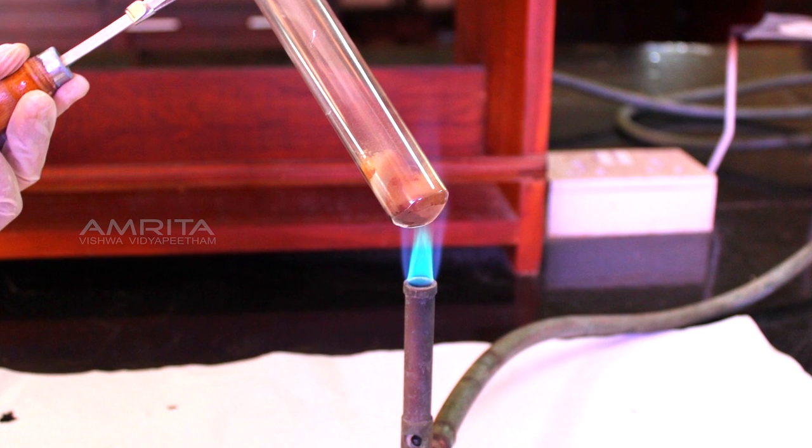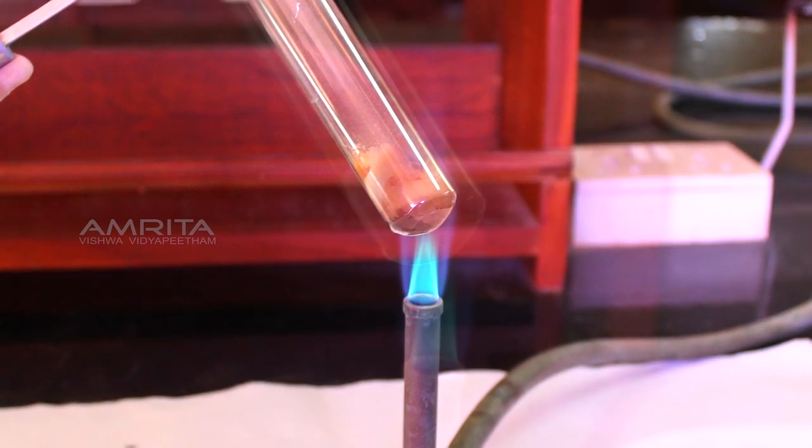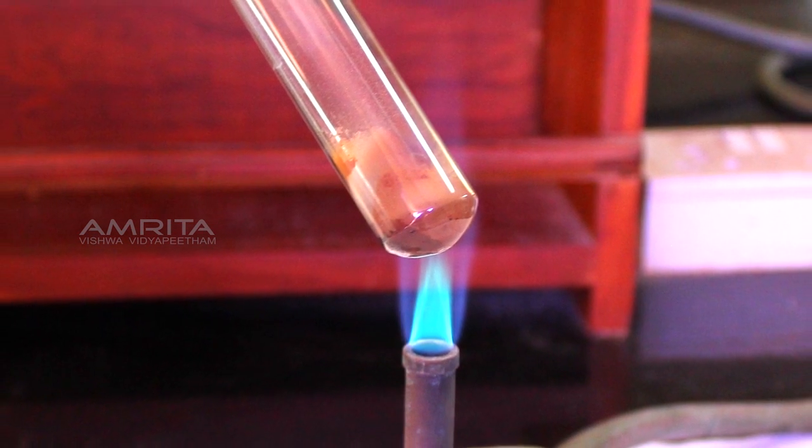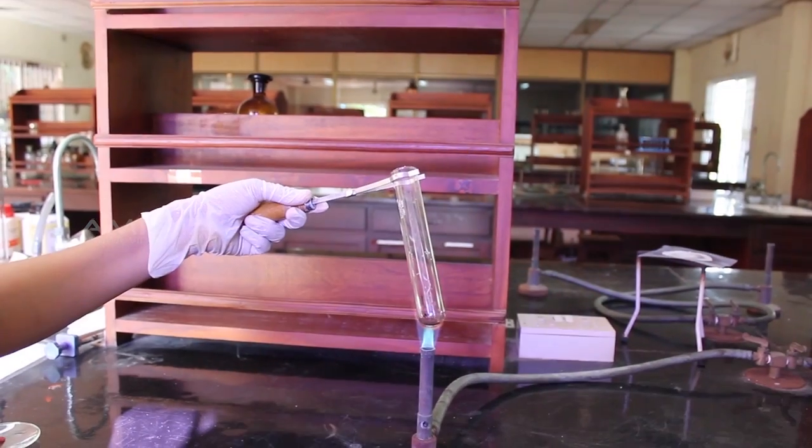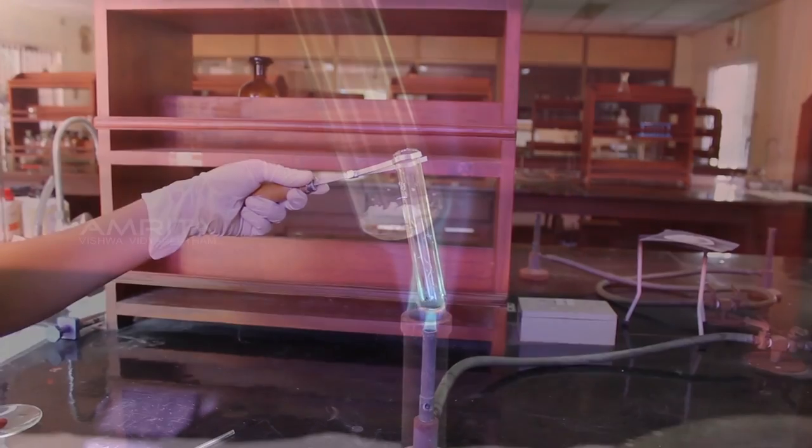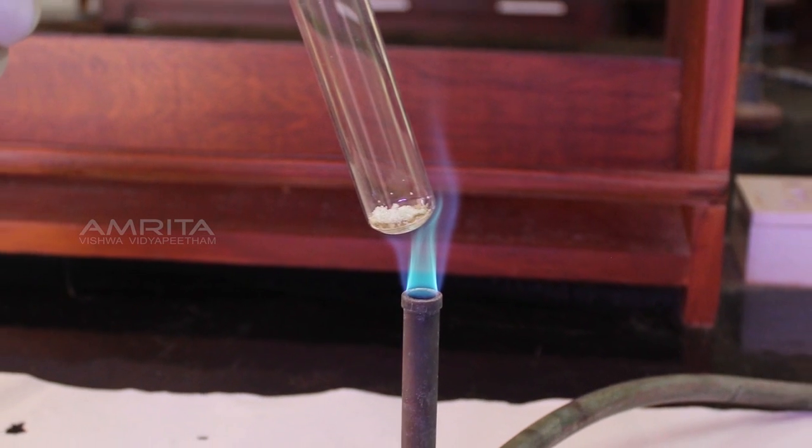Here, anhydrous ferrous sulphate decomposes to form a dark brown solid, i.e. ferric oxide, sulphur dioxide, and sulphur trioxide, which are emitted out of the boiling tube as gases.